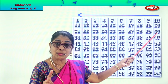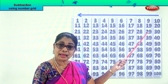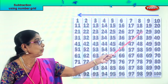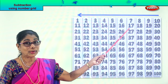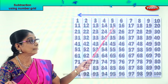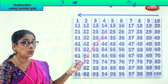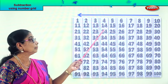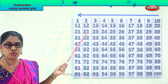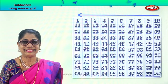Look at this — 30. From 30 take away 1 — 29. Very good. 29 take away 1 — 28. 28 take away 1 — 27. 27 take away 1 — 26. 25 take away 1 — 24. 24 take away 1 — 23. 23 take away 1 — 22. 22 take away 1 — 21. You got it!